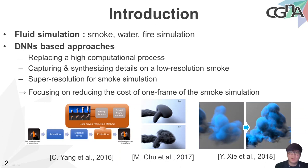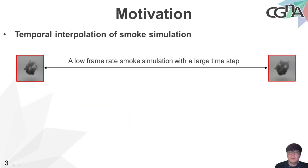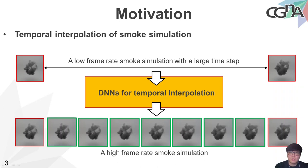These methods need to repeat the simulation or inference of a deep neural network model for every frame in order to generate a flow simulation with a high frame rate. In this talk, we propose a method to efficiently generate a high-frame-rate simulation via temporal interpolation of smoke simulation results. The target simulation is computed with a large time step, and we use DNNs for temporal interpolation to obtain a high-frame-rate smoke simulation.